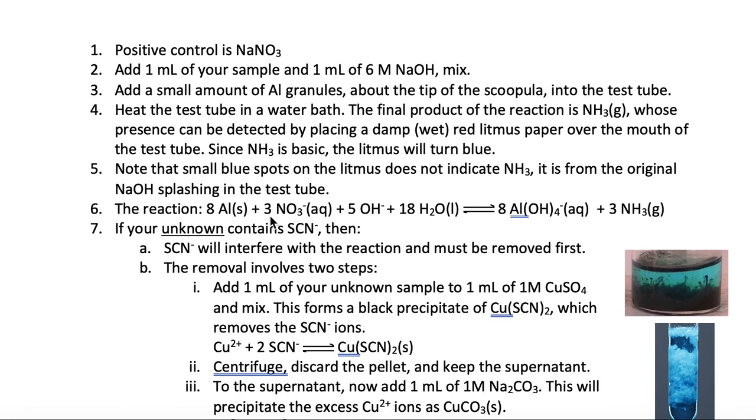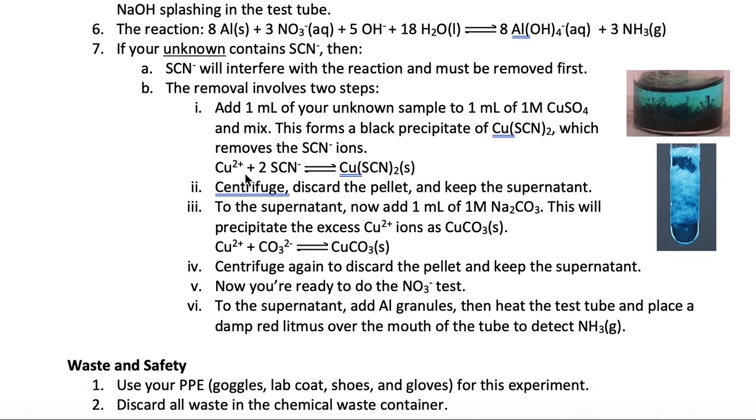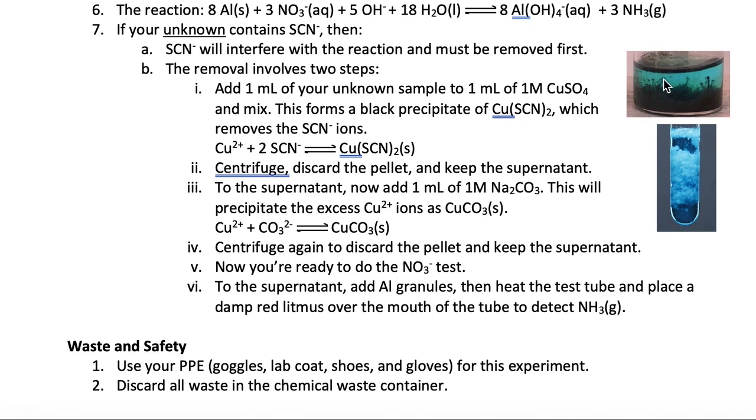If your unknown has thiocyanate in it, this test won't work. So you're going to have to remove the thiocyanate first. The removal occurs in two steps. First, you're going to add copper sulfate to precipitate the thiocyanate as copper thiocyanate, which has a black color precipitate as shown here. You then centrifuge to remove the pellet that contains the copper thiocyanate.